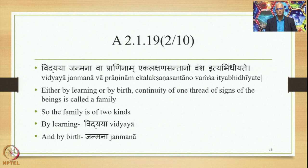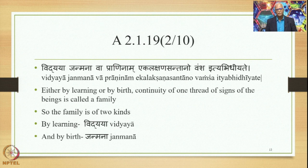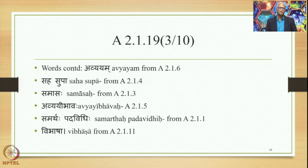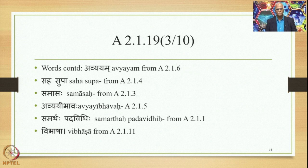The tradition explains: generally there are two types of families. Vidyaya is by learning, Janmana is by birth — either by learning or by birth. Vamshyena is by birth. Continuity — Eka Lakshana Santanaha Praninam — continuity of one thread of signs of beings is called a family: Vamsha ityabhidhyate. So a family is of two kinds: one by learning (Vidyaya) and the other by birth (Janmana). Words continued from previous sutras are: Avyayam from 2.1.6, Sahasupa from 2.1.4, Samasaha from 2.1.3, Avyayibhavaha from 2.1.5, Samartha Padavidhi from 2.1.1, and Vibhasa from 2.1.11.